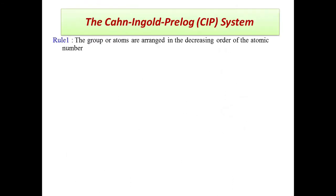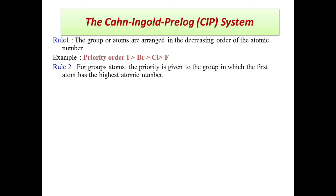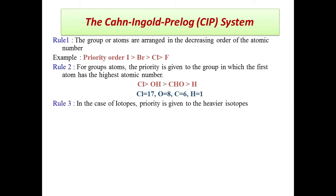The CIP rule: atoms or groups are arranged in increasing order of atomic number. Rule 1 — highest atomic number gets first priority, lowest gets last. For example, chlorine (atomic number 17) has higher priority than hydrogen (atomic number 1). Rule 2 — priority is given to the group whose first atom has the highest atomic number. Rule 3 — for isotopes, priority is given to the heavier isotope; for example, deuterium has higher priority than hydrogen.